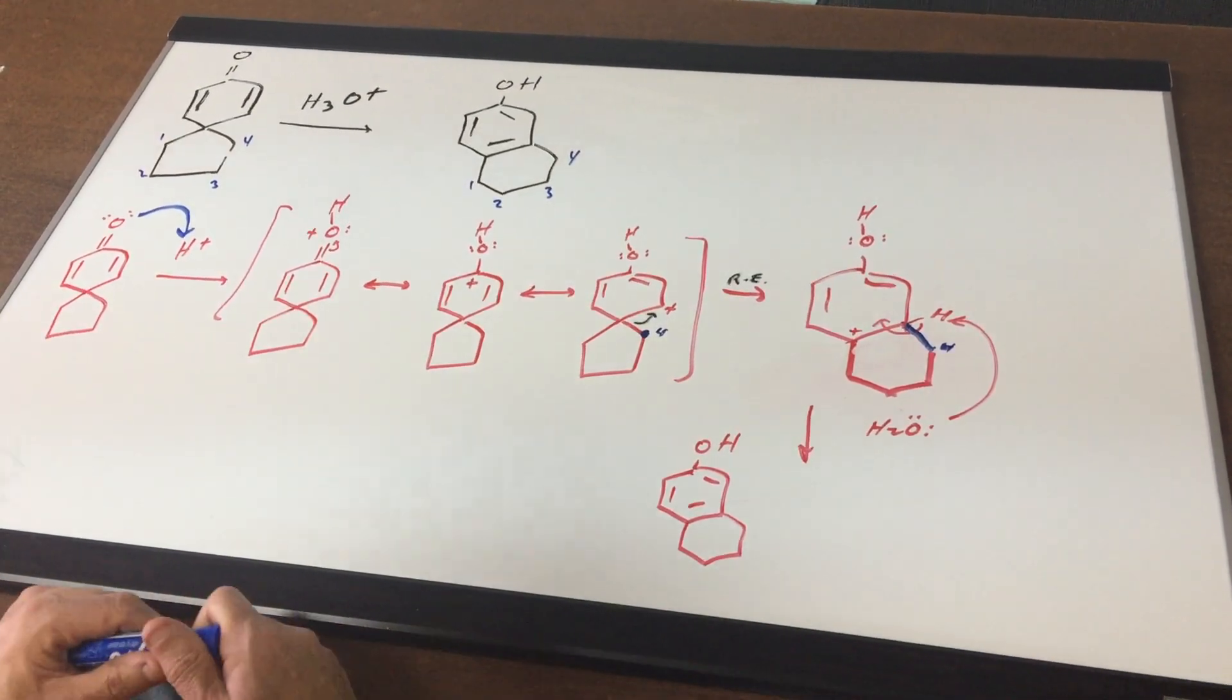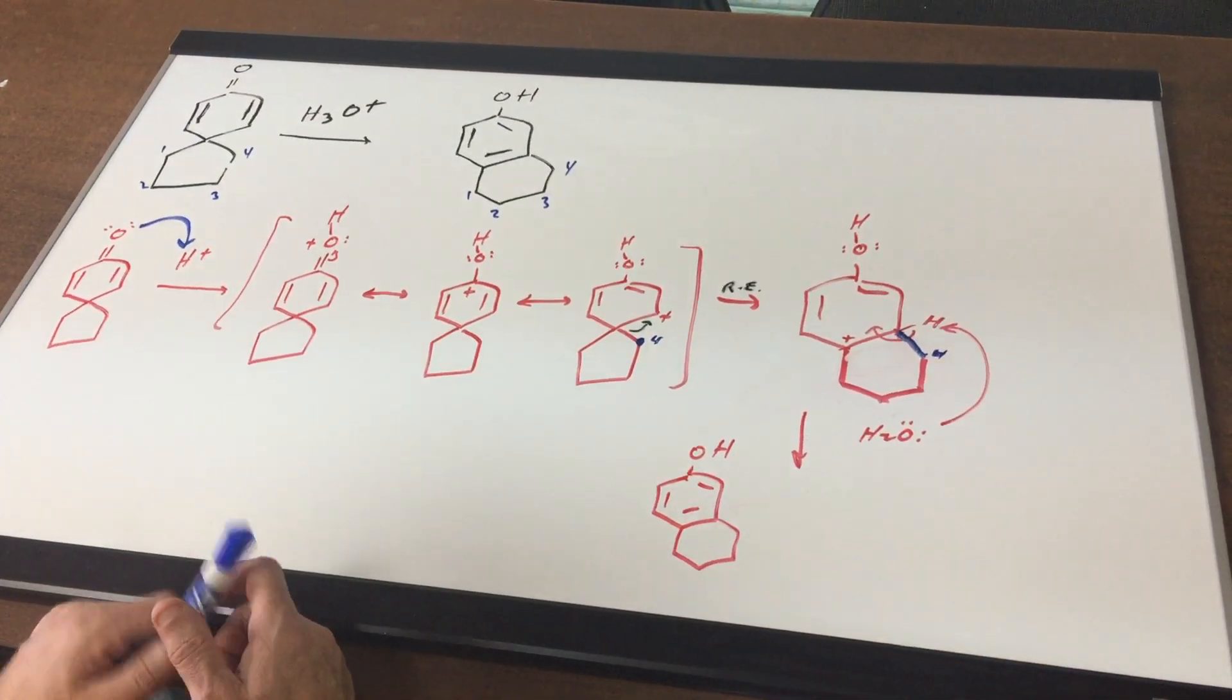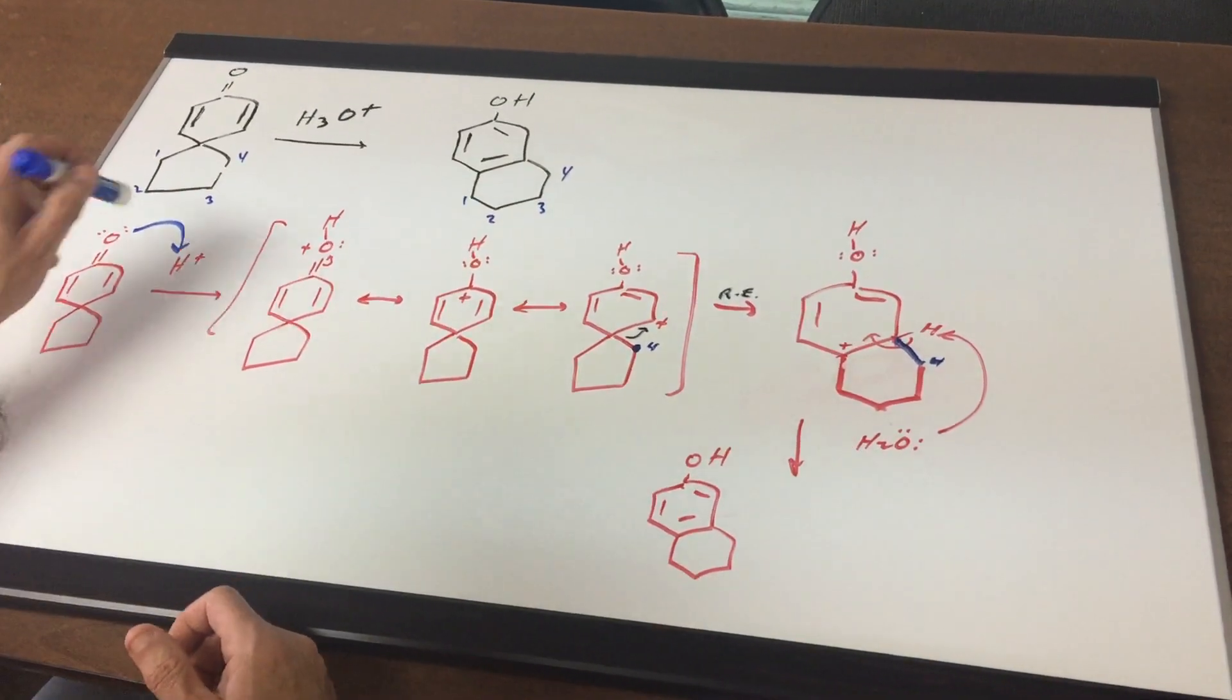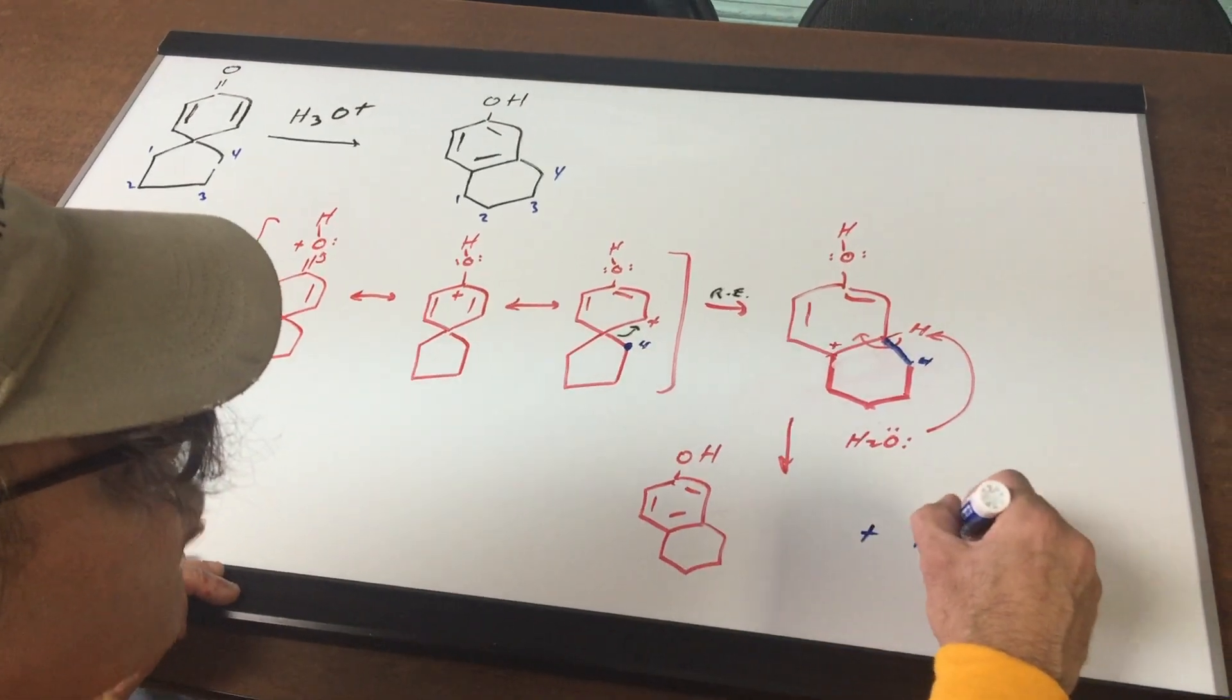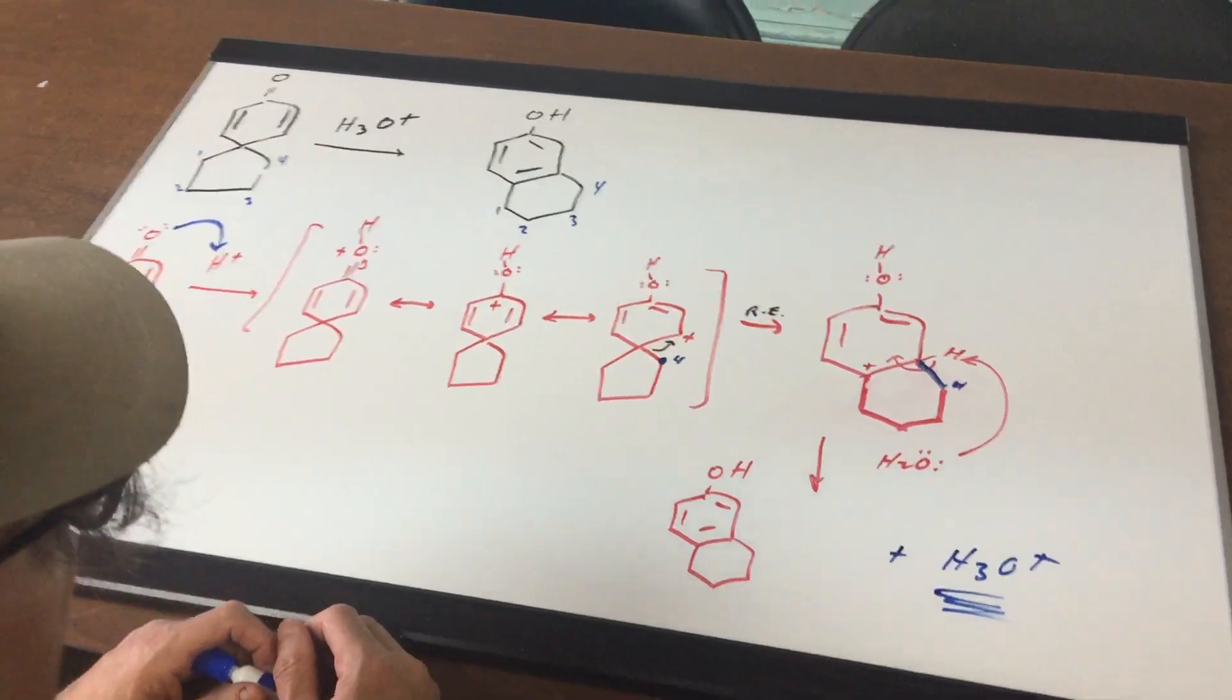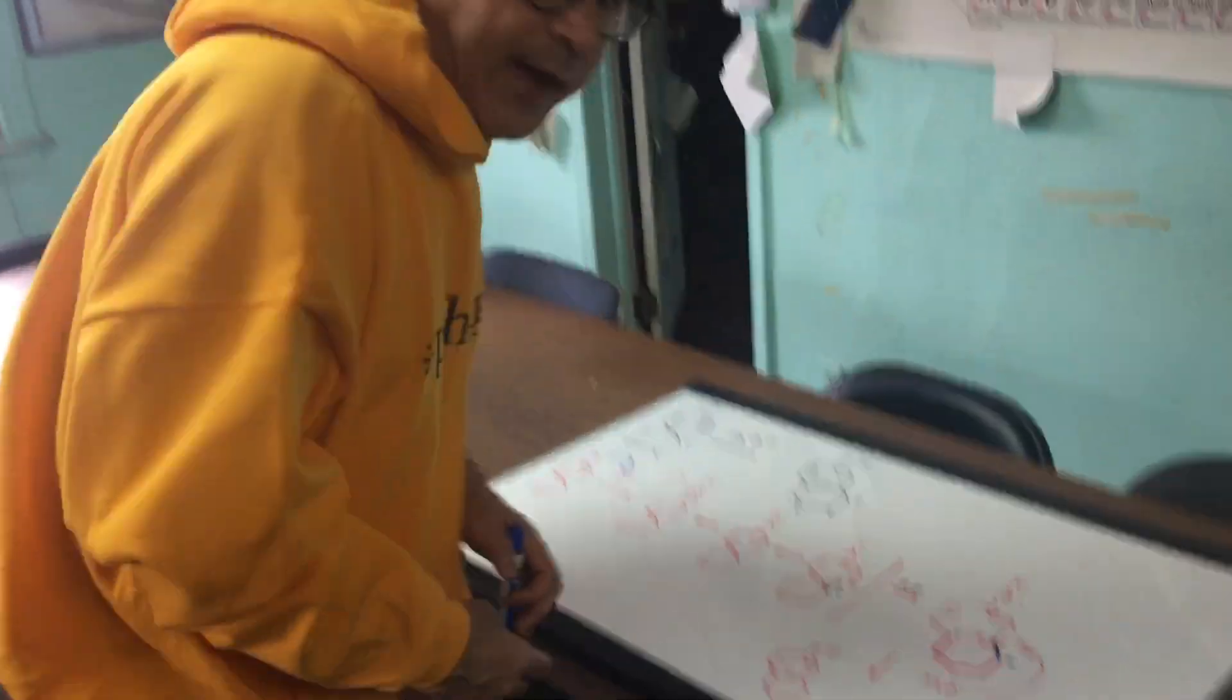So this was a fast problem but it did look a little intimidating because of the spiro, but the minute I saw that spiro I knew we had to break that ring but I needed an opportunity and acid gave me the opportunity. And notice we regenerated back the acid so the acid would be called a catalyst. Alright that does it, that helps you on a nice mechanism for today. Good day to you.